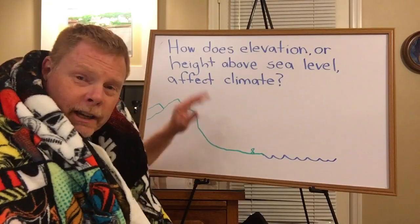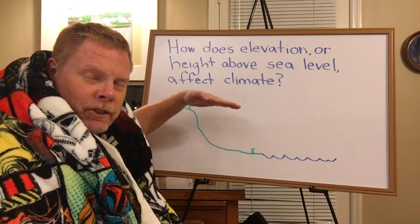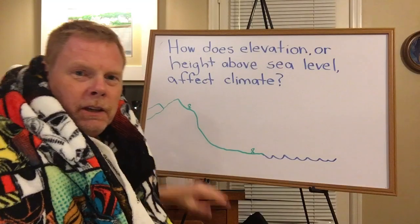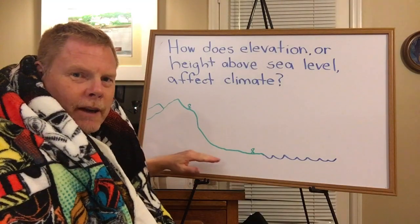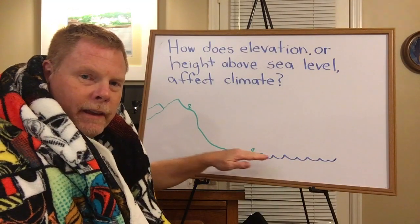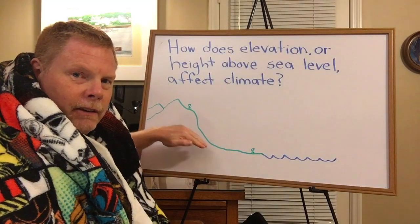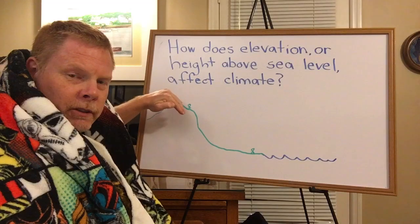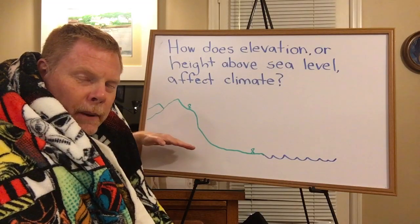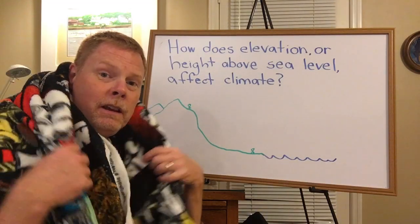So, how does elevation, or height above sea level, affect climate? In this model, we see the ocean, and then we see some gently sloping land up to the top of the mountain. This is low in elevation, this is high in elevation.